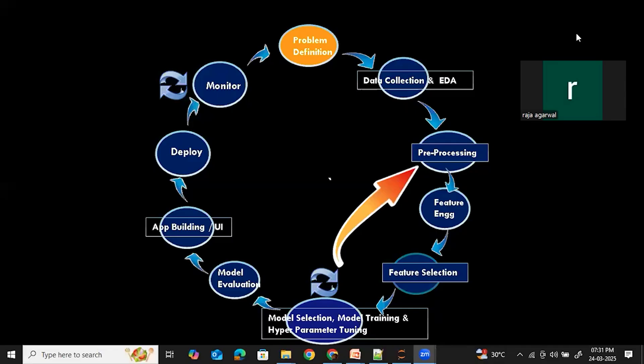Here is the machine learning life cycle. In this, the problem definition is the first stage. Before we jump into building fancy machine learning models, let's take a step back and ask ourselves, why are we even doing this? This is where the first and most important stage of the machine learning life cycle comes in, which is the problem definition.